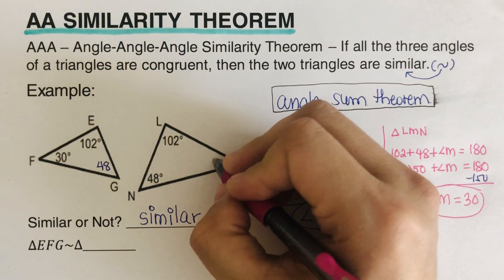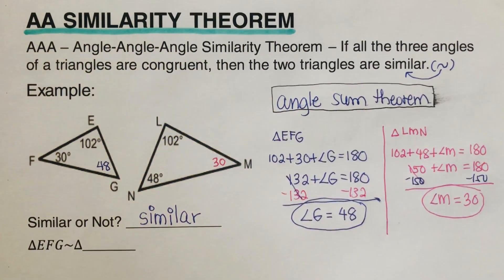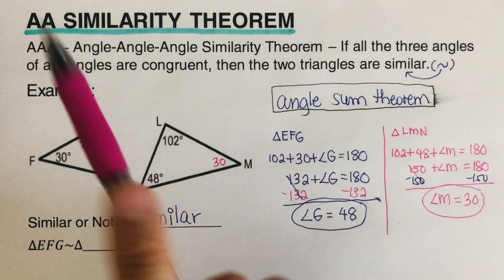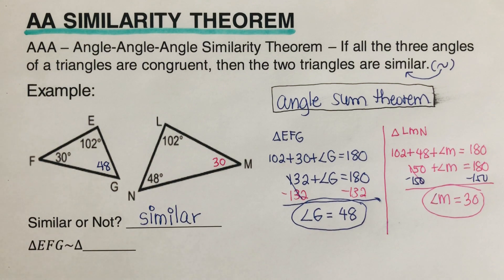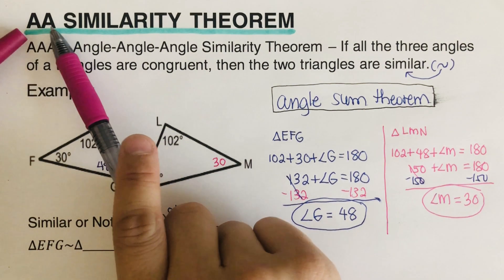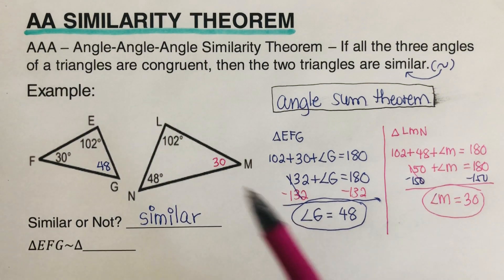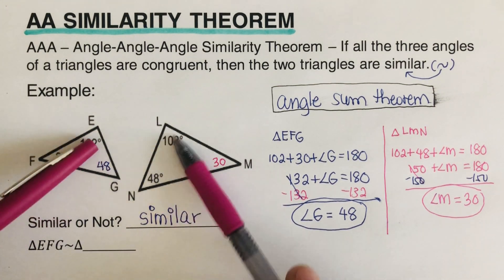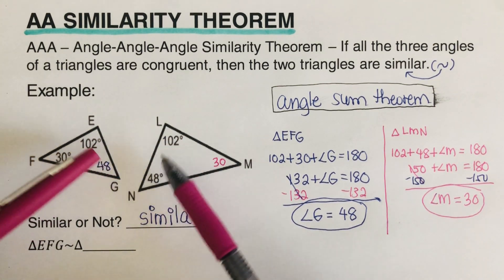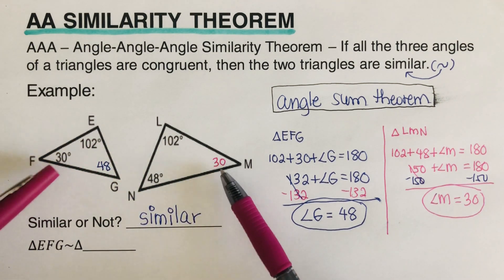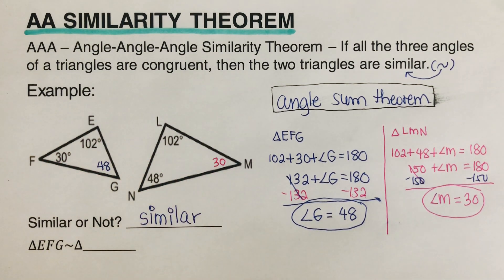So this side right here is 30. So if you can spot two angles, that's why otherwise you can have this option. It's either AA, angle, angle, or AAA, angle, angle, angle. So in here we have proven that AA would work. If AA would work, AAA would work. So all of the angles are the same.